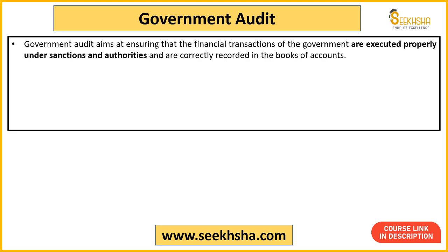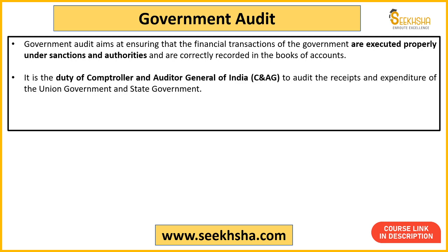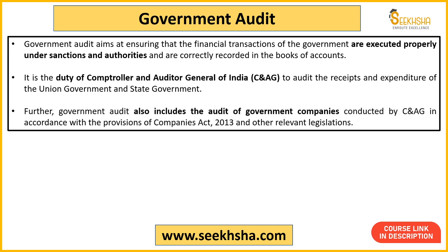Government audit: this involves auditing government organizations — checking whether various transactions happening within the government are being done properly, with proper authority approval, without any money leakage. This is mainly the duty of the CAG (Comptroller and Auditor General), who oversees the government's receipts and expenditure. The CAG also audits various government companies as per the Companies Act 2013.